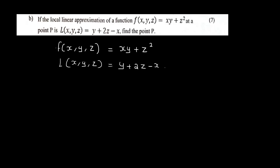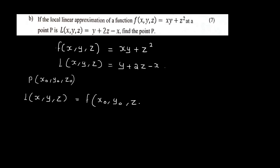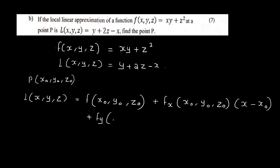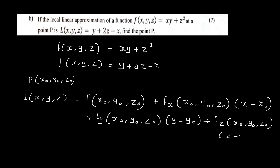We assume P = (x0, y0, z0). The local linear approximation formula is: f(x0, y0, z0) plus Fx(x0, y0, z0) times (x - x0), plus Fy(x0, y0, z0) times (y - y0), plus Fz(x0, y0, z0) times (z - z0).